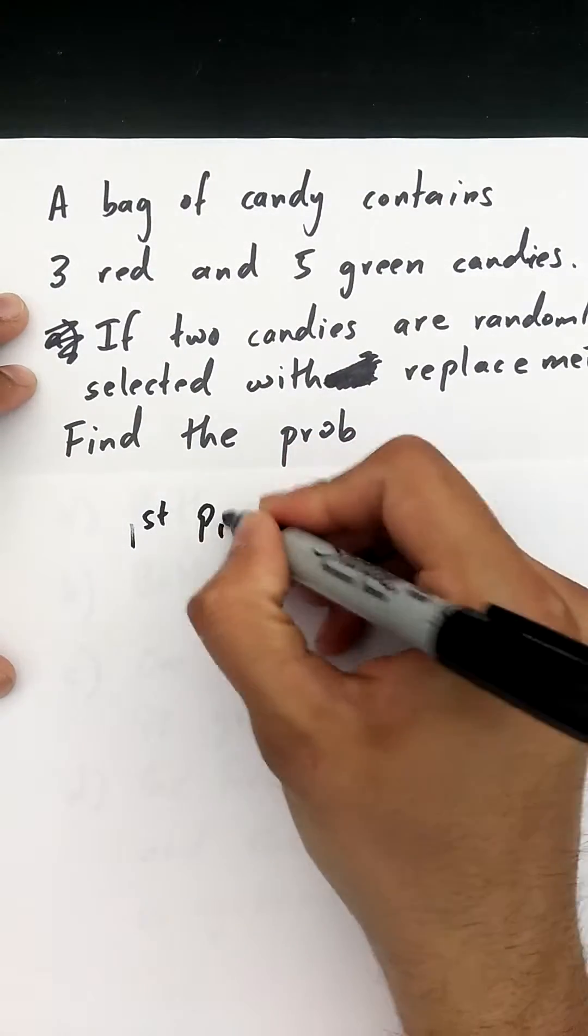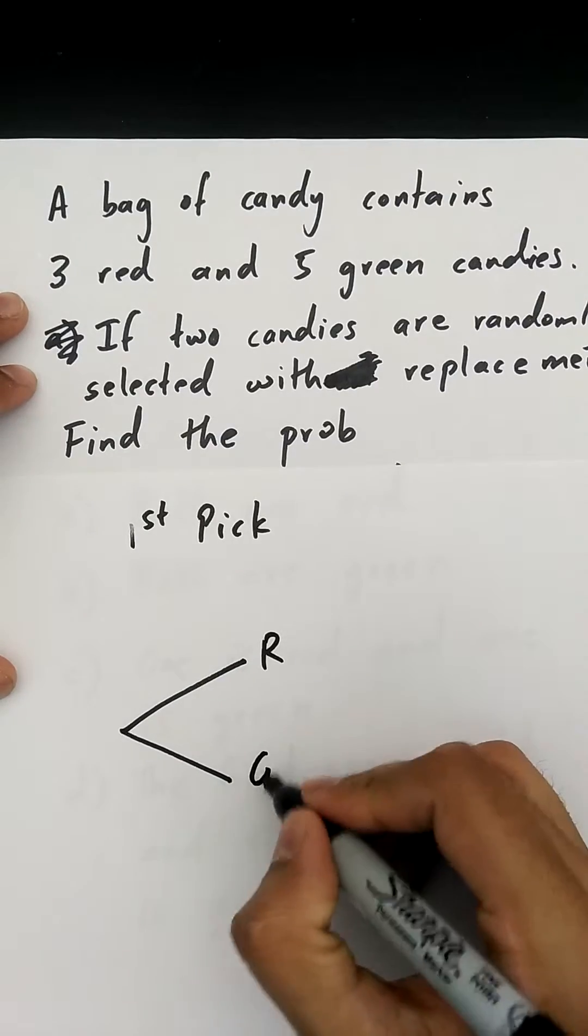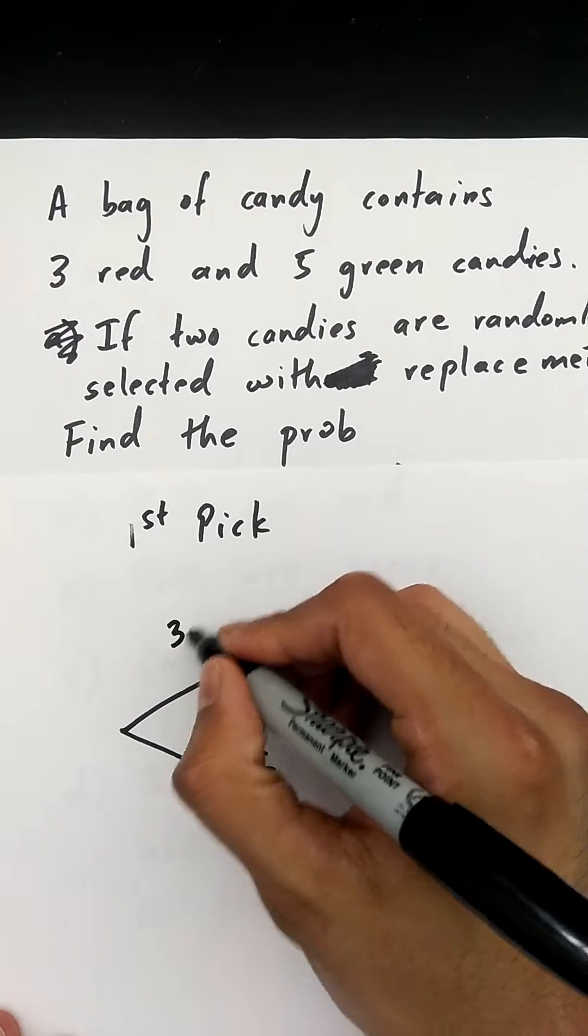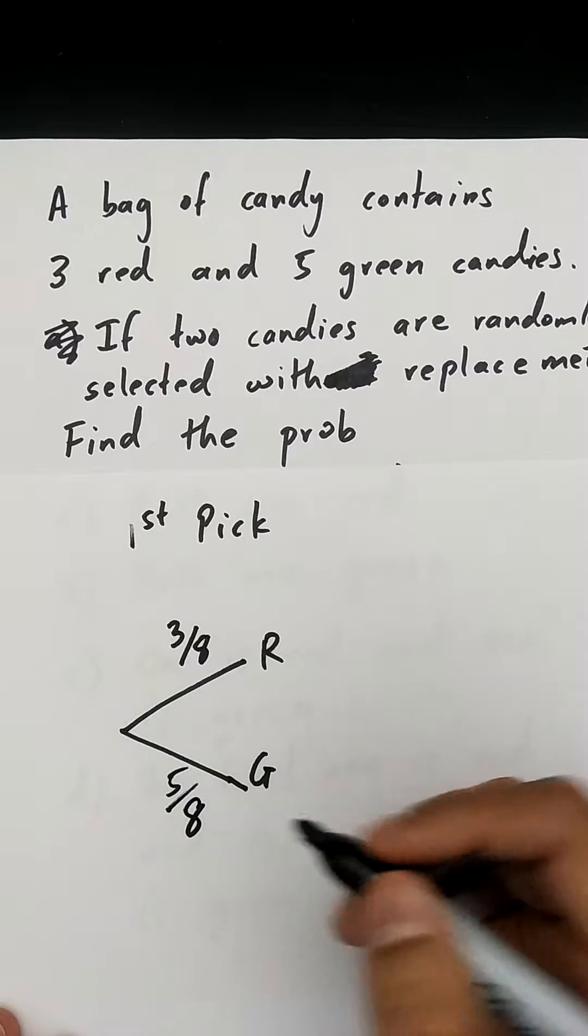my only possibilities are to either pick a red or a green candy. I have a total of three red candies and a total of eight in the bag. Total of five green and eight in the bag.